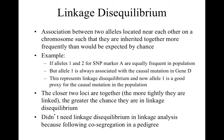The closer two loci are together — the more tightly linked they are — the greater the chance they are in linkage disequilibrium. As an aside, we didn't need linkage disequilibrium in linkage analysis, because it takes many generations and many matings for all the alleles of two tightly linked loci to equilibrate and become randomly associated in a population. For the few generations and matings in a pedigree, specific alleles at one locus should remain on the same chromosome as specific alleles at the other locus, as long as the loci are tightly linked.